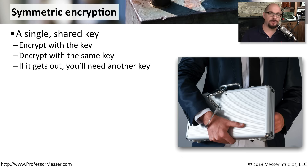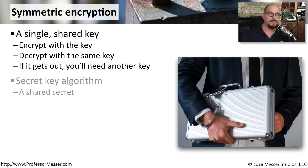If you've implemented symmetric encryption, you're using a single shared key for both the encryption process and the decryption process. If a third party gains access to this key, you'll need to throw that key away, use a different key, and distribute that key to both the sender and the recipient. This uses a shared key algorithm — some people refer to this as a shared secret — and hopefully it's a secret that is only shared between the people who need to encrypt or decrypt this information.